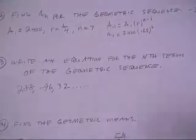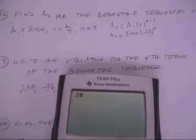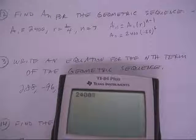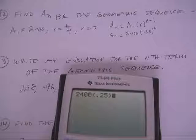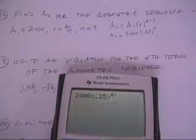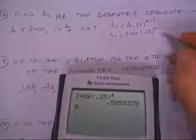If you can enter that on your calculator, you'll be golden on this one. So how about 2400 times 0.25 to the 6th power. There you go. I would have taken that decimal.